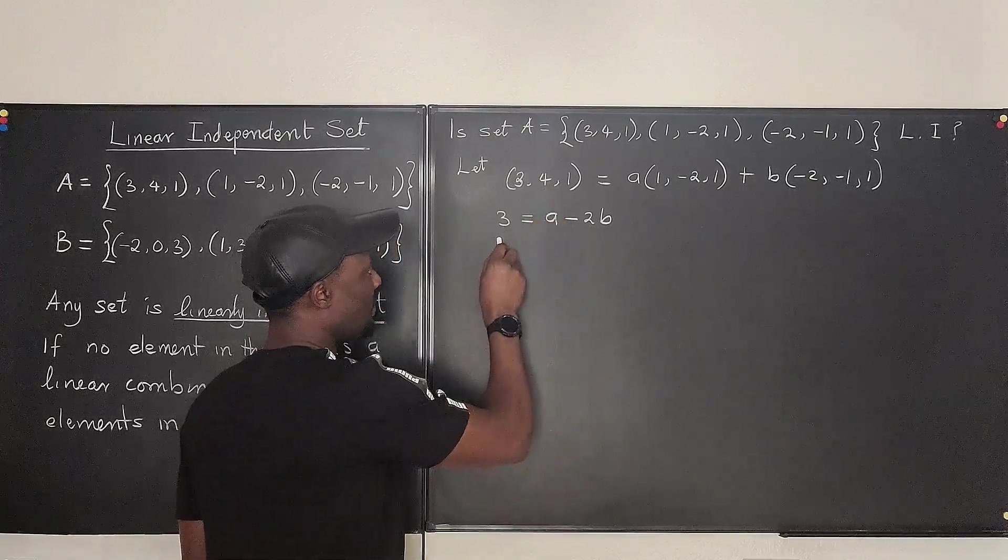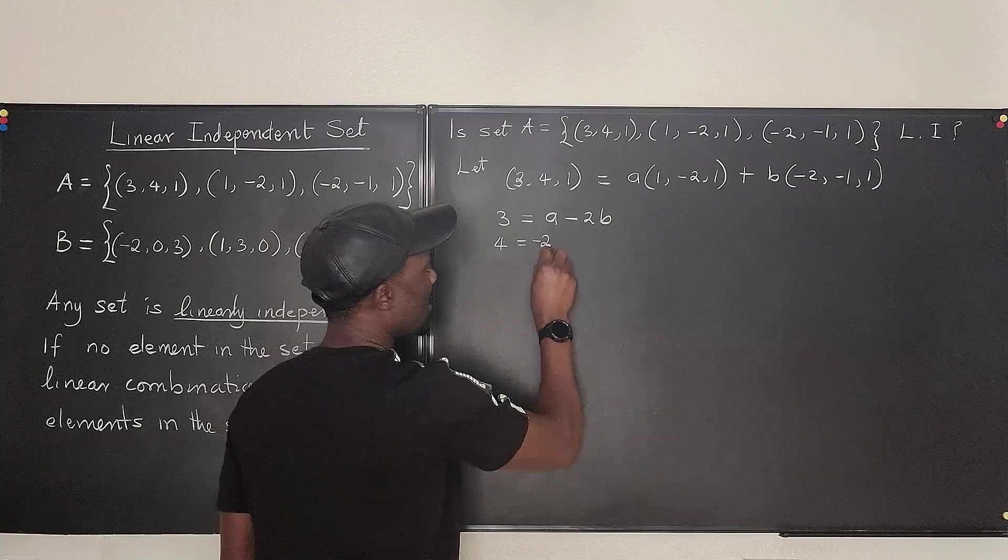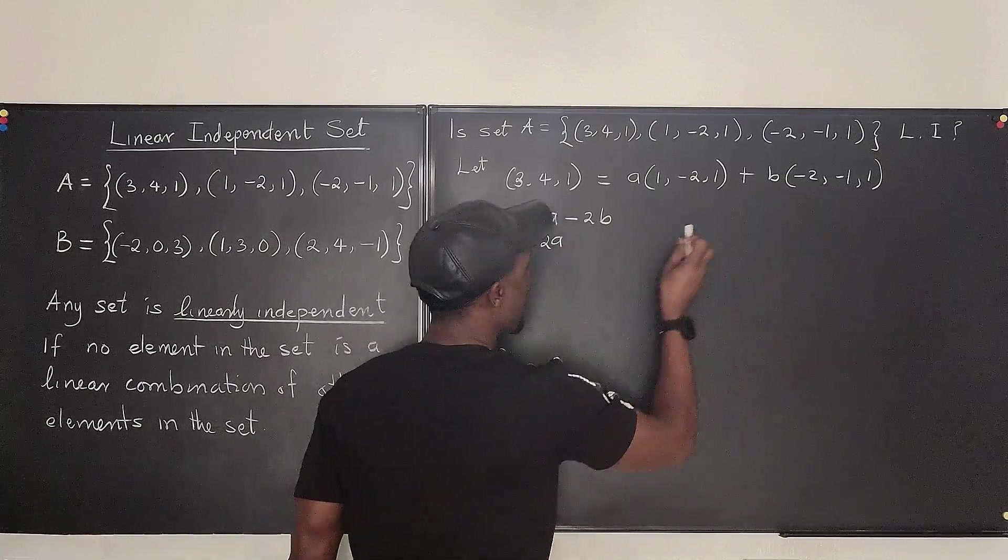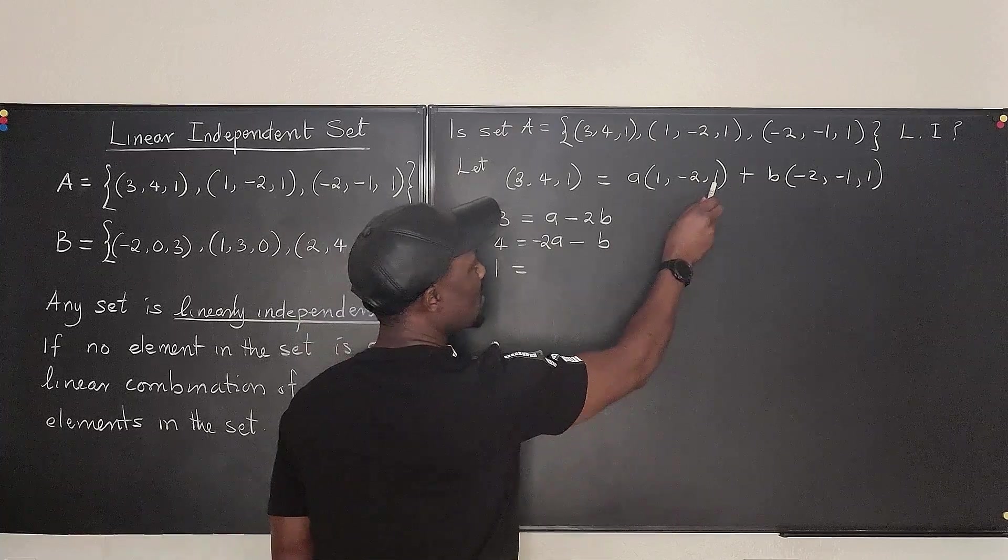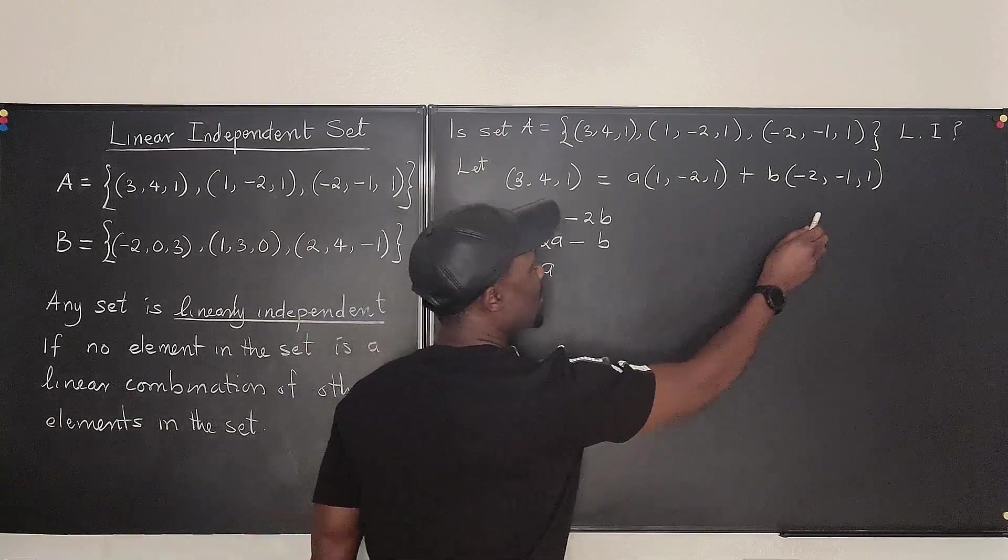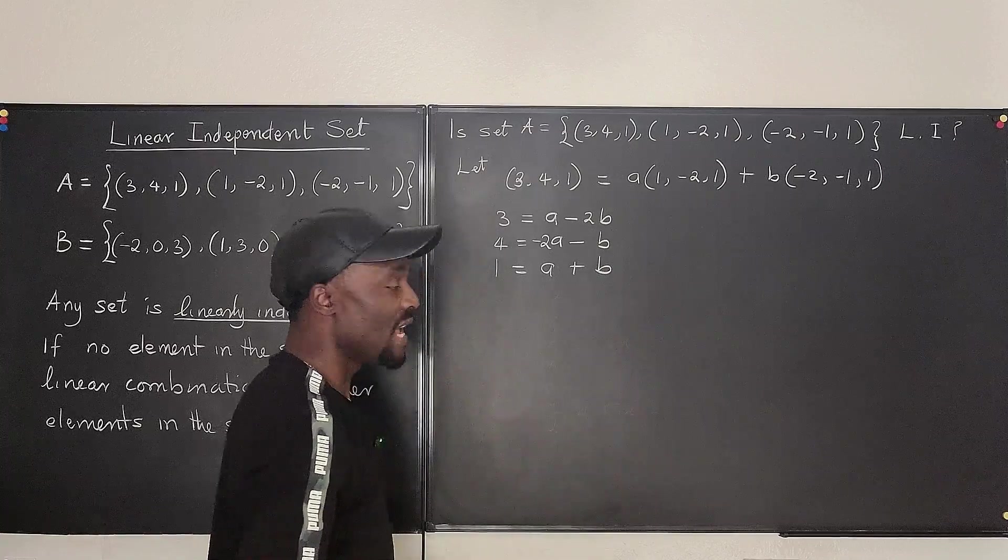Then you go to the middle one, 4, corresponds to minus 2A, and corresponds to minus B. And the third one, 1, corresponds to A, and corresponds to B, plus B. Oh, nice.